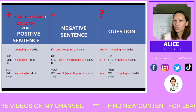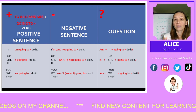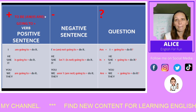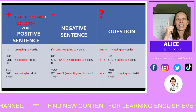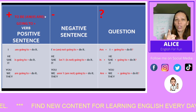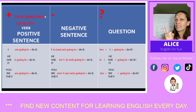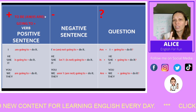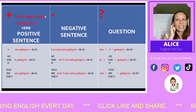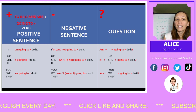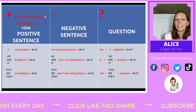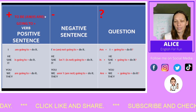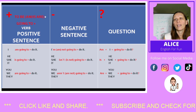To make a negative sentence using this structure, we just need to add the particle 'not'. I am not going to do it. He isn't going to do it. She isn't going to do it. It isn't going to do it. You aren't going to do it. We aren't going to do it. And they aren't going to do it. As you can hear, I use the short forms: isn't, aren't. These are the forms you will normally use in spoken language.